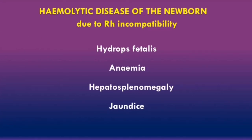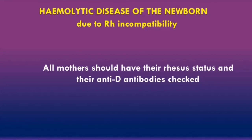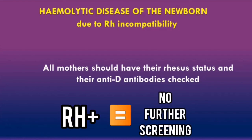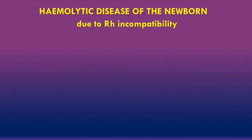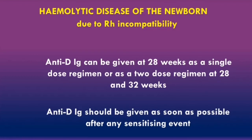This jaundice will either present at birth or within the first 24 hours of life. In terms of screening, all mothers should have their rhesus status and anti-D antibodies checked. If a mother is rhesus positive, no further screening is required. For women who are rhesus negative, anti-D immunoglobulins can be given at 28 weeks as a single dose regimen, or as a two-dose regimen at 28 and 32 weeks. The anti-D immunoglobulins will counteract any anti-D antibodies within the maternal circulation, and should also be given as soon as possible after any potentially sensitizing event.